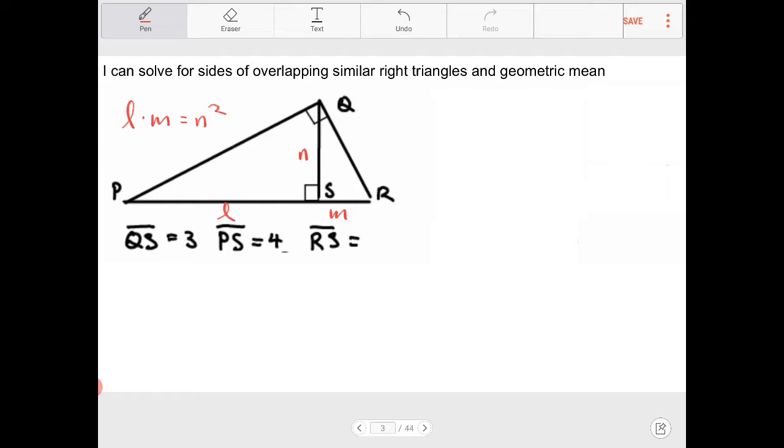Well, PS is 4, right? So that's our L, 4 times RS. I don't know what that is. I'm going to call that M. We can call it whatever we want. We can call it X. And this is going to equal to QS which is our N, but we need to square it. So it's going to be 3 squared. So in other words, M, which is our RS here, is going to equal to 9 fourths.